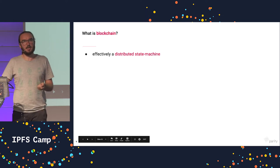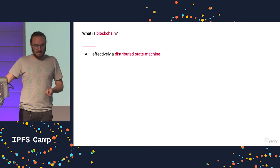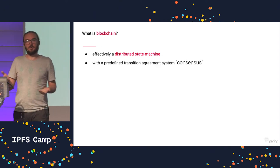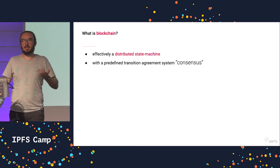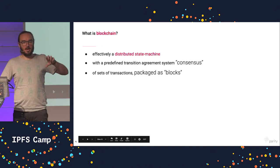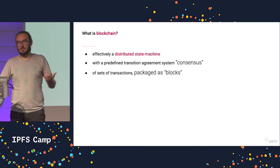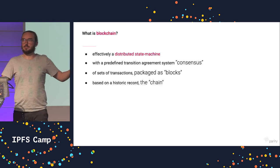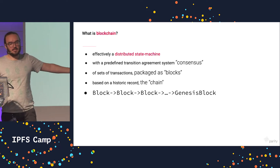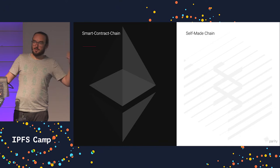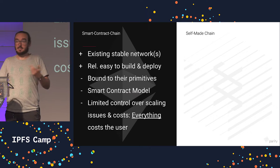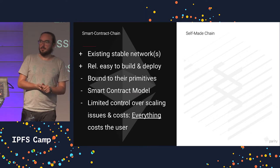Basically, blockchain is effectively a distributed state machine — sounds good — that has some form of agreement system. It's very open in how this is constructed, which it calls consensus. It packages transactions in sets of blocks, where every transaction is a change to the state machine, and every block refers to the block before, making a historic chain all the way back to the Genesis block. We've already seen one example of such a chain: a smart contract chain like Ethereum, and it has a bunch of potentially interesting features for us.